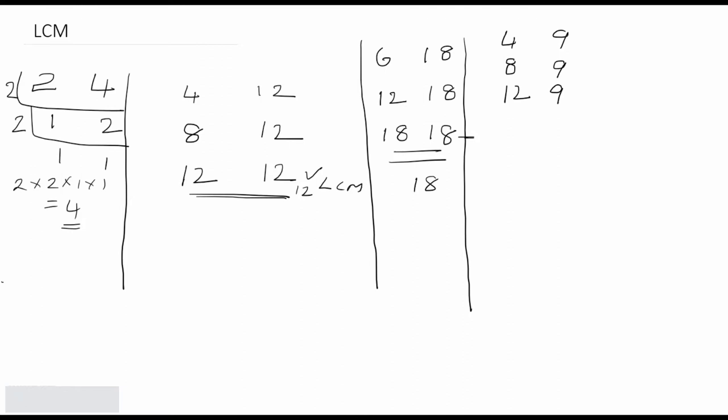Are twelve and nine equal? No. The small number on the nine side is nine, so add nine to nine: nine plus nine is eighteen. Keep twelve as it is. Are twelve and eighteen equal? No. The small is twelve: twelve plus four is sixteen. Keep eighteen as it is. Are sixteen and eighteen equal? No. The small is sixteen: sixteen plus four is twenty. Keep eighteen as it is.